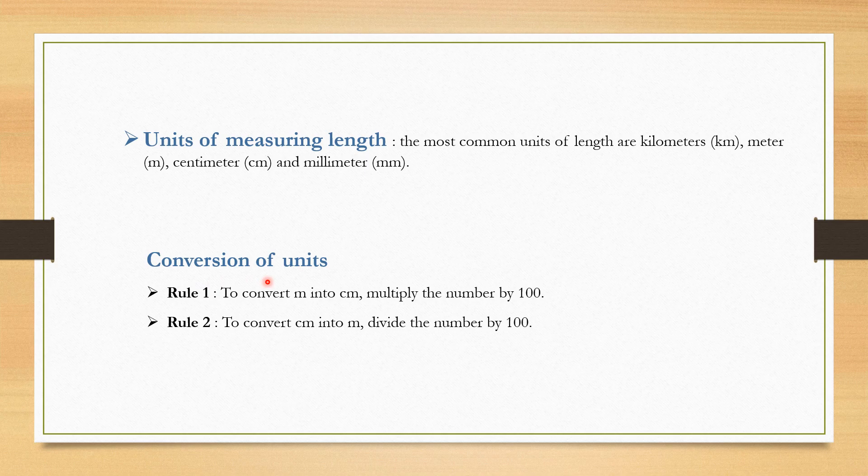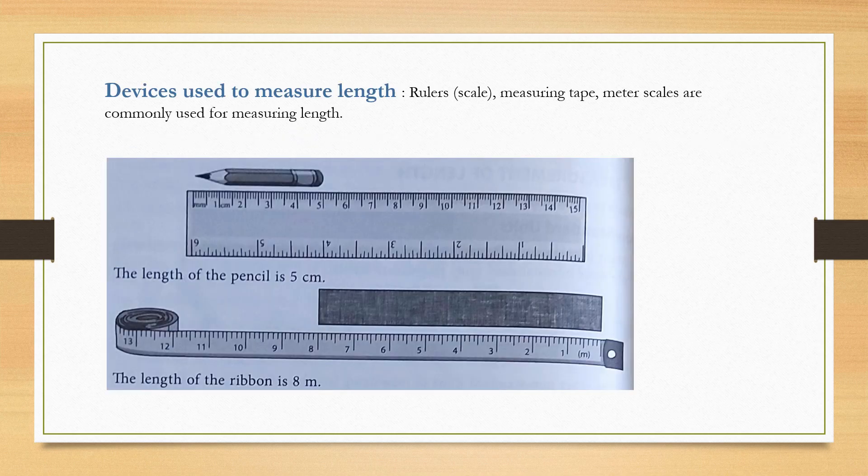Conversion of units: To convert meter into centimeter, multiply the number by 100. To convert centimeter into meter, divide the number by 100. Devices used to measure length: Rulers, measuring tape, meter scales are commonly used for measuring length.